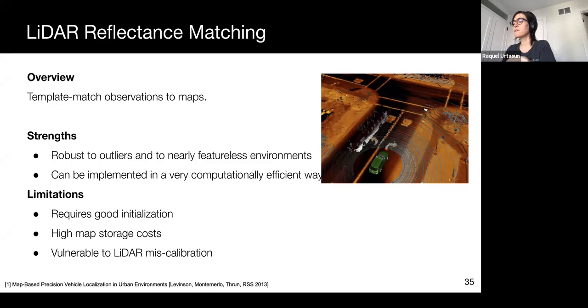At the same time, just like the geometric alignment methods, reflectance matching methods require good initialization. They also have relatively high map storage costs.